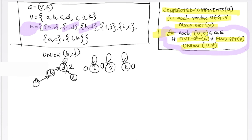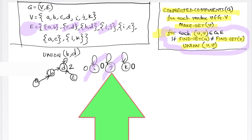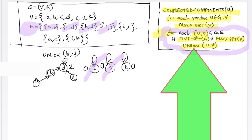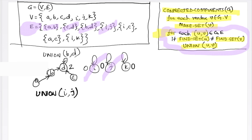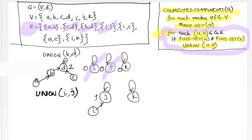Now our next edge is I, J. I is in this component and J is in this component, meaning they are in two separate components. So we have to combine them using another union operation. In this combination, J will become the root. Union of I, J would result in a tree where J is the root and I is the child, and the rank will increase by 1. The rest of the trees will remain the same.